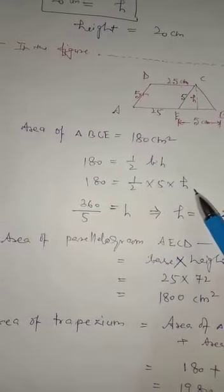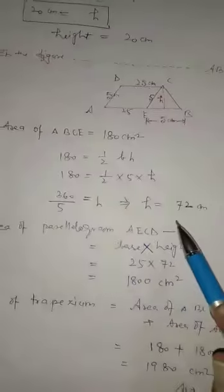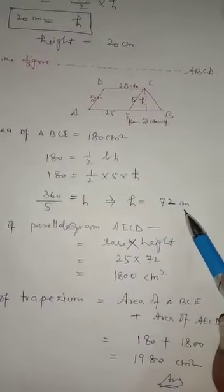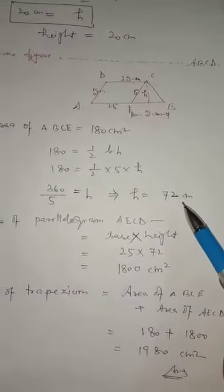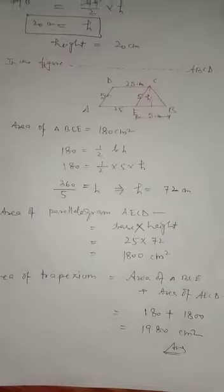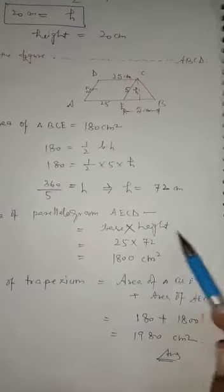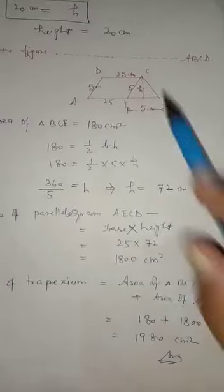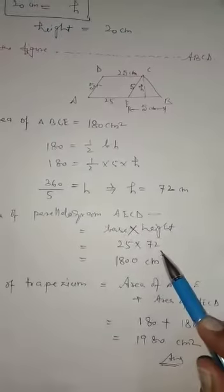Area of parallelogram equals base times height: 25 times 72 equals 1800 centimeter square. The parallelogram area is 1800 cm square.